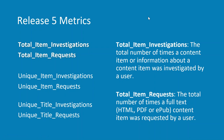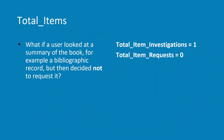Starting with total item investigations and total item requests: the total item investigations is the total number of times a content item or information about a content item was investigated by a user — you could call it the total of the clicks. The total item requests is the total number of full text requests — HTML, PDF, or EPUB — requested by the user.